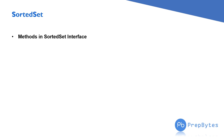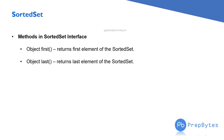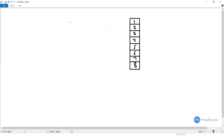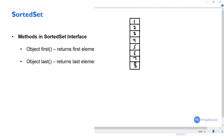Let's see some of the methods in the SortedSet interface. These methods are only defined in the interface, not implemented — they will be implemented by TreeSet. The first method is first(), which returns the first element of the sorted set. The second method is last(), which returns the last element of the sorted set.